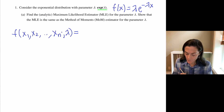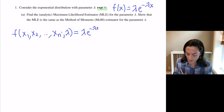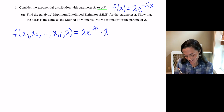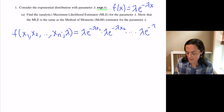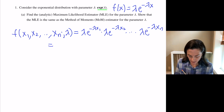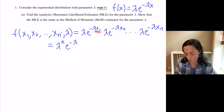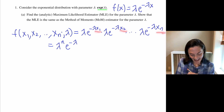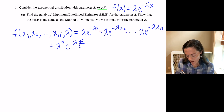We would multiply: we would have λ·e^(−λx₁) times λ·e^(−λx₂), and then keep multiplying out to λ·e^(−λxₙ). Using properties of exponents, you notice we have lambda to the n, and then e to the minus lambda times the sum from i equals 1 to n of xi.